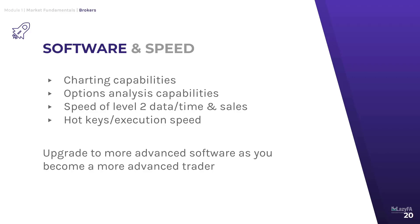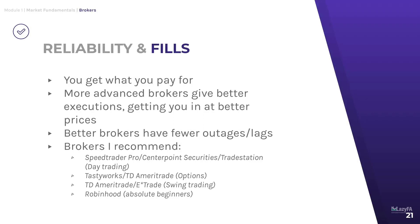All of this is super important especially if you are an active trader, but the best advice I can give if you're new is to start simple and upgrade to more advanced software as you become a more advanced trader. The last thing to consider when selecting a broker is their reliability and order fills or execution. The bottom line is you get what you pay for. More advanced brokers will give you better executions, faster order fills, better prices, and better software. Free or ultra-low-cost brokers will suffer from more outages during market volatility, more lags when the market moves quickly, and generally lesser quality. That said, using a commission-free broker like Robinhood can be really helpful for people who are brand new, because it cuts out a lot of the noise and intimidation factor that comes with more advanced software.